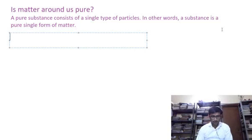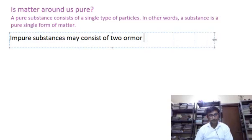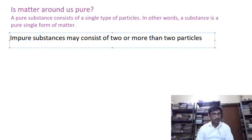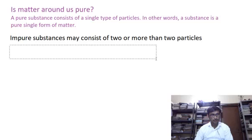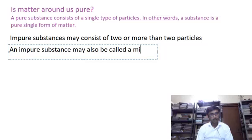We'll write it down. Impure substances may consist of two or more than two particles. And also we can say that an impure substance may also be called a mixture.